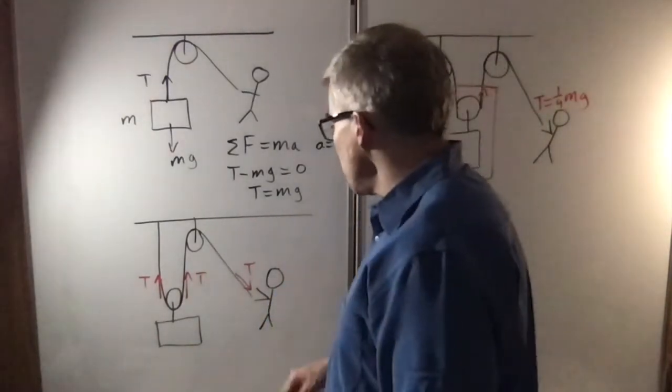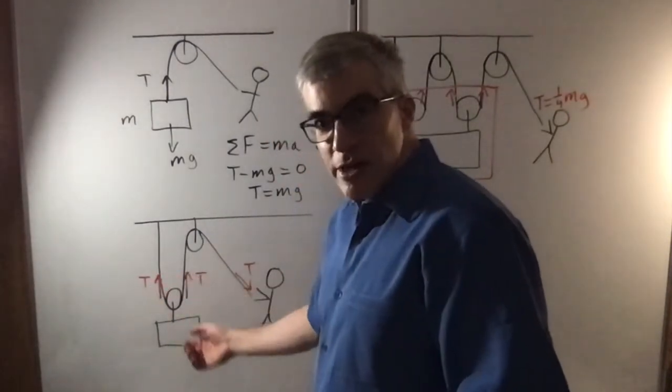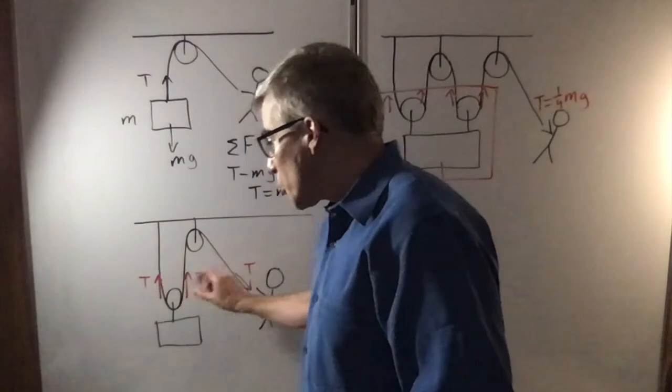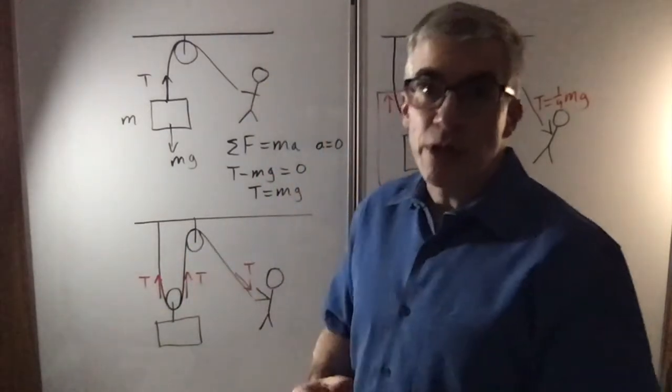There's a price to be paid, of course. You have to pull two meters of rope to make this go up one meter, because to make this go up a meter, you have to make this one meter shorter and this one meter shorter, so you have to reel in two meters of rope.